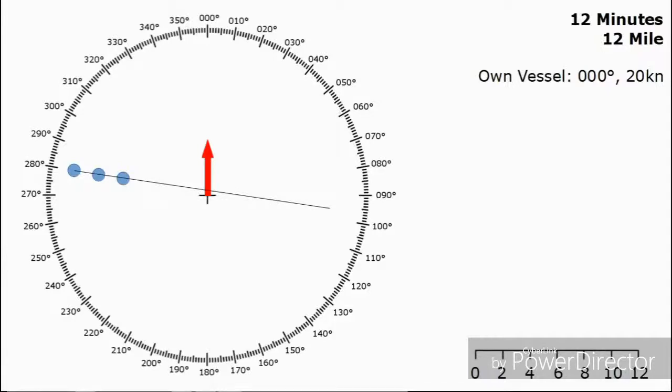This tells us the CPA is not going to be zero. There's going to be a slight CPA because there's a difference between the center of the ring and that line. We can measure the radius of the circle that we've put on to determine the CPA, which in this case is 0.4 of a mile.